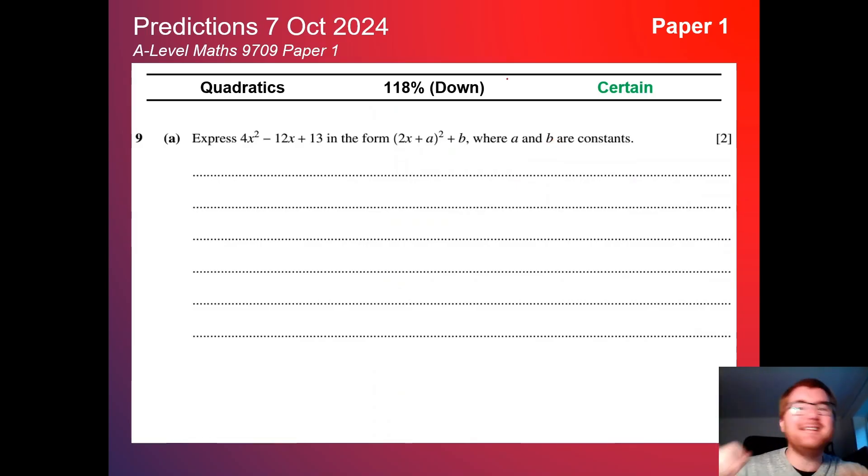On to quadratics. There we are, see they're right in front of you. 118%, slightly down, but they can be very sneaky. If there's one question I would definitely revise, it's quadratics. It's putting these things in what we call completing the square form - that is very, very important. If you need more practice on this, then do check out the video above.